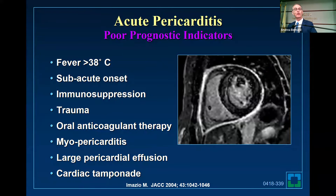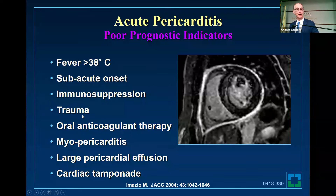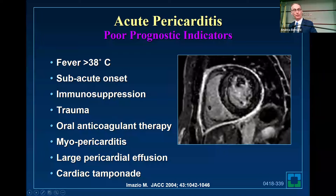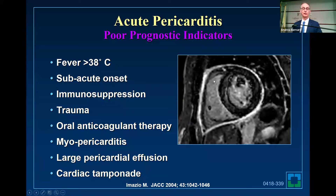Who gets admitted to the hospital? Who are you very worried about? If they have fever, a subacute onset, they're immunosuppressed, somebody got hit in the chest, they're on blood thinners, they have myopericarditis, effusion and tamponade — and even the MRI would be a good reason to admit them, calm things down, and get them on the proper therapy.